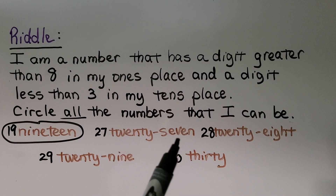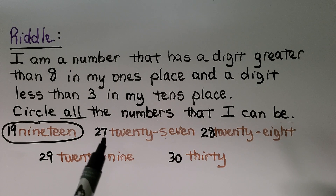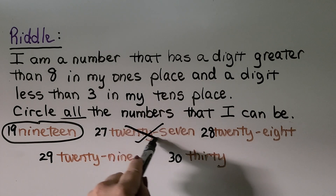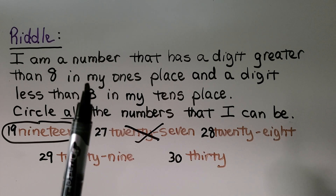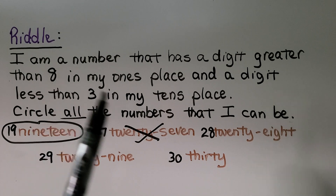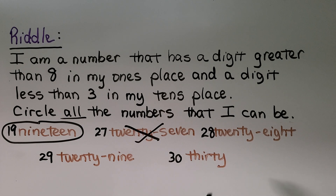Twenty-seven: it needs a digit greater than eight in the ones place, but seven is not greater than eight, so 27 cannot be the number. Twenty-eight: if the digit in the ones place is greater than eight, it's not eight — it has to be more than eight — so it's not 28.